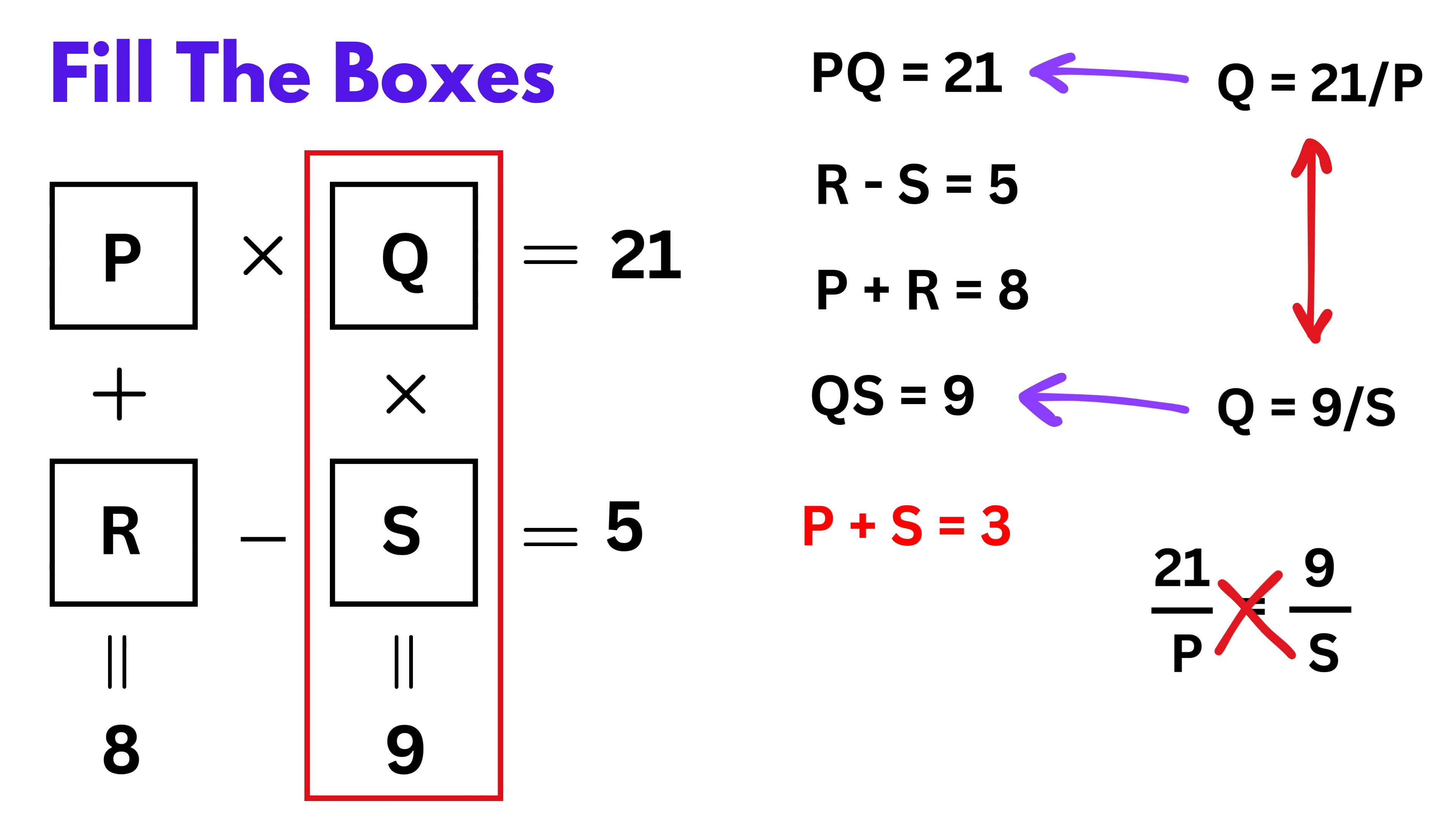Now cross multiplying, we get 21 times S equals 9 times P. Let's isolate P by dividing both sides by 9, giving us P equals 21 times S divided by 9. Now we substitute this expression of P into the earlier equation P plus S equals 3.